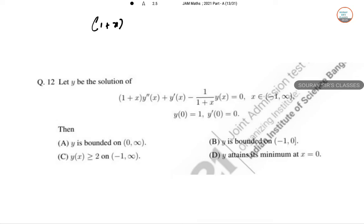So, 1 plus X, Y double dash, I am just not writing the thing again. This thing is equal to 0. Okay. So, Y(0) and this thing.